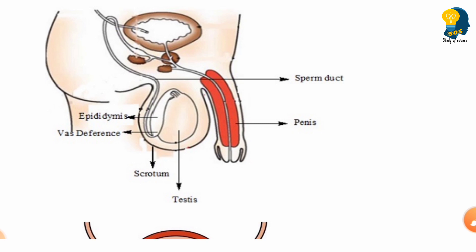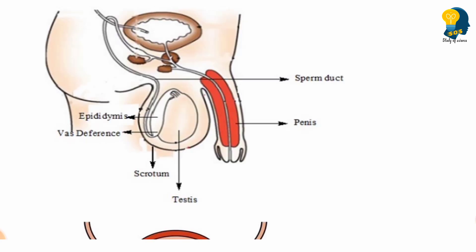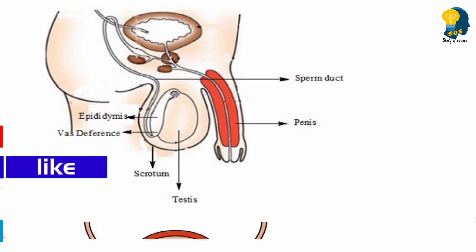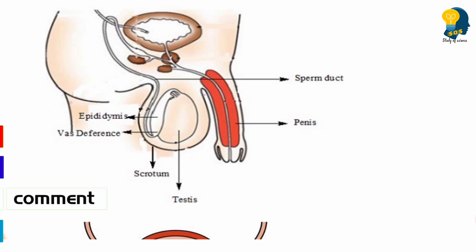These are some of the glands which help by adding their secretions to aid the easy movement of sperms inside the female body. I hope you have all understood the purpose of the male reproductive system, the different parts present in it, and their functions. If you have any doubts, you can write them in the comment section and I will answer your questions. That's all for this session.